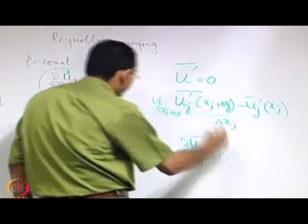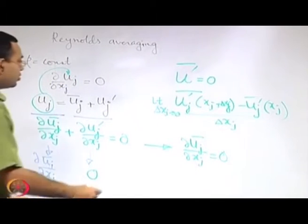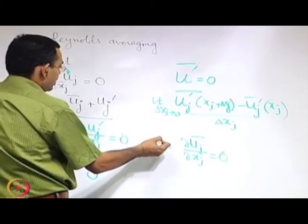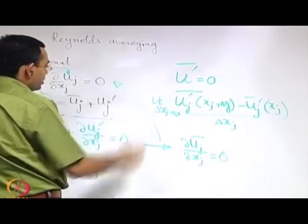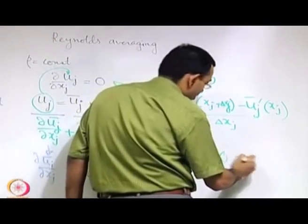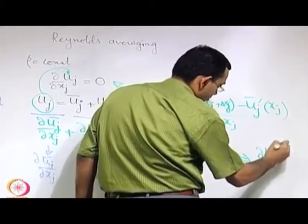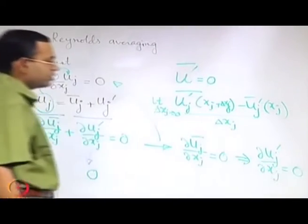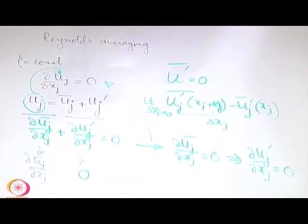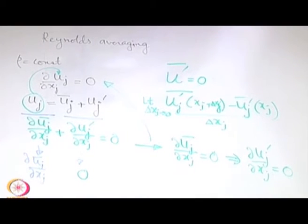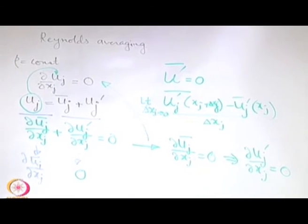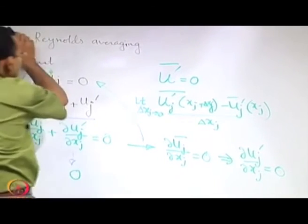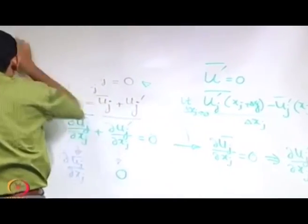Once the averaged continuity equation is satisfied, if we substitute it back into the original continuity equation, we find that the fluctuation components also satisfy the continuity equation. That is one of the important results to remember. With this technique of averaging, we will next look into the averaging of the Navier-Stokes equation.